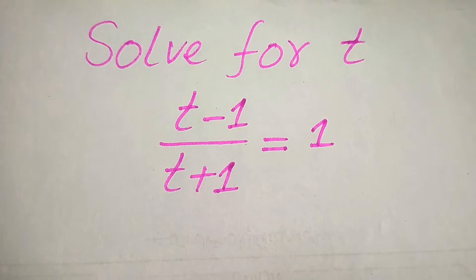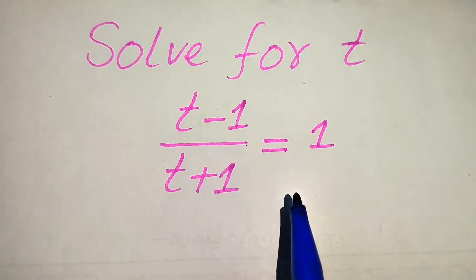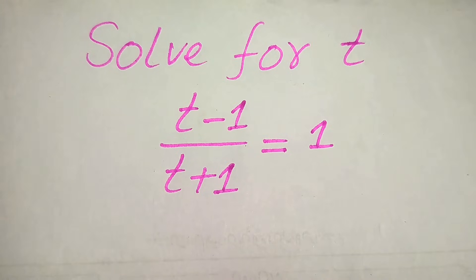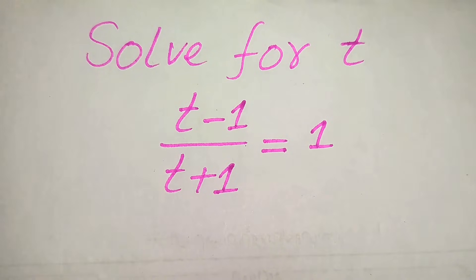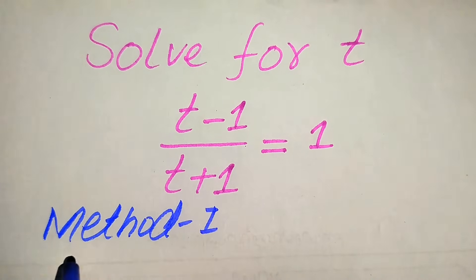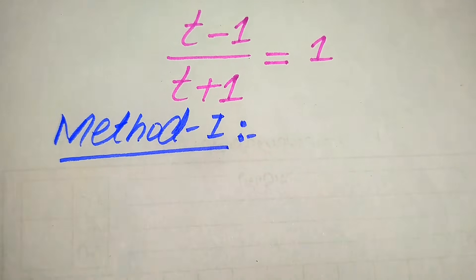Hello everyone. We will solve this problem for the values of t if we have (t - 1) / (t + 1) = 1. We solve this for all values of t and at the end we will verify which roots are solutions and which are extraneous roots. We also explain the term extraneous root. We solve this problem using two methods, so please watch till the end.